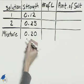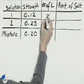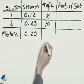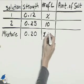We don't know the number of liters for the first solution, we'll call it x. The number of liters for the second solution is 10, and together that will be x plus 10.